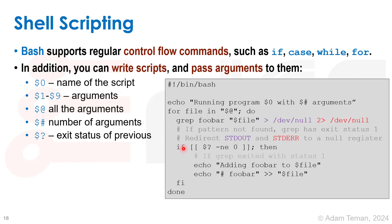Then we use an if: if dollar question mark minus ne 0 — meaning if the exit status was not equal to zero, i.e. grep did not find foobar inside the file — then we add foobar to the file by echoing and appending it. The fi finishes the if block. When the iteration finishes, it goes back and processes the next argument, checking if foobar is inside that file and adding it if not. Finally it echoes done. It's a complex example that shows what you should be able to understand and follow in bash scripting.